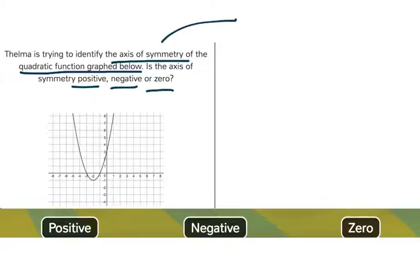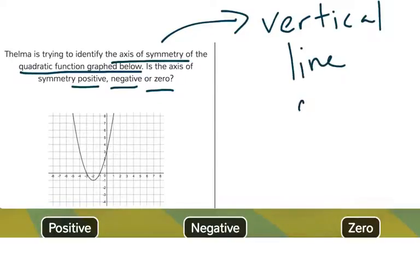What is the axis of symmetry? That is the vertical line which cuts the graph in half.